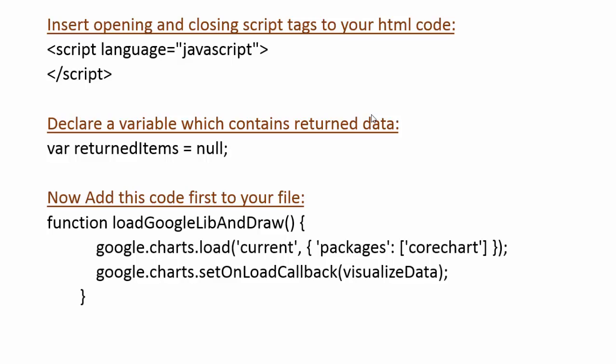Inside that function, first is google.chart.load — this will load the Google Chart on the current page, and the package will be 'corechart', which is basically a reference to a Pie Chart. After that, google.chart.setOnLoadCallback — this set-on-load-callback function will call a visualizeData function, and when visualizeData is called all the information is bound to the returnItems variable.